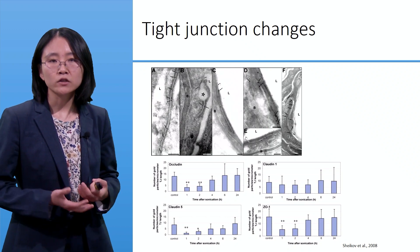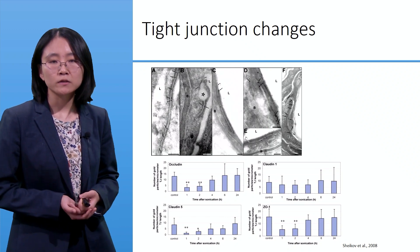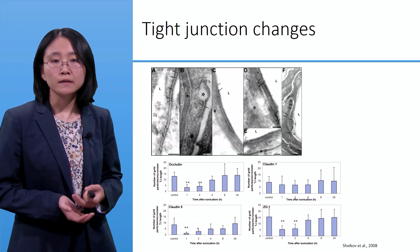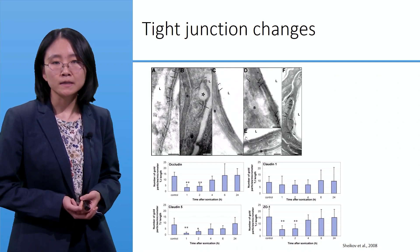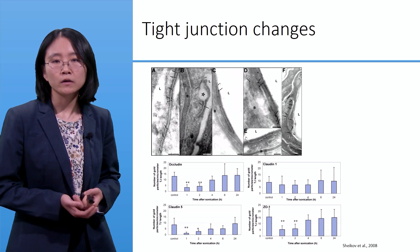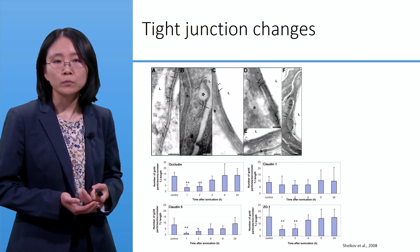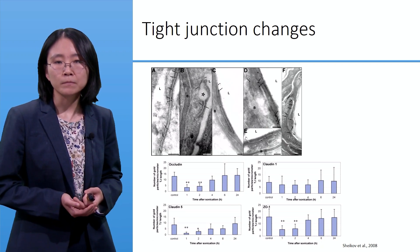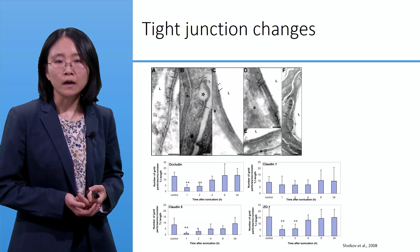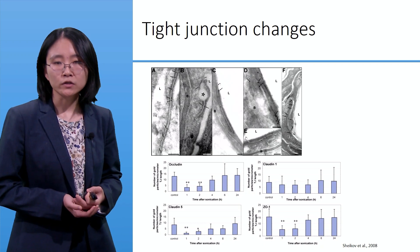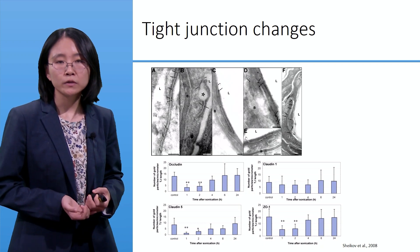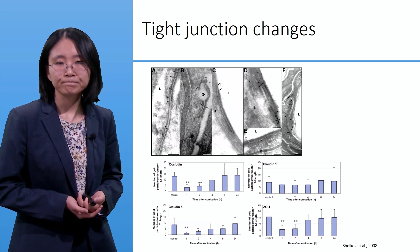EM studies and immunostaining studies show a reduction of important proteins that make up the tight junction, including occludin, claudin, and ZO1.